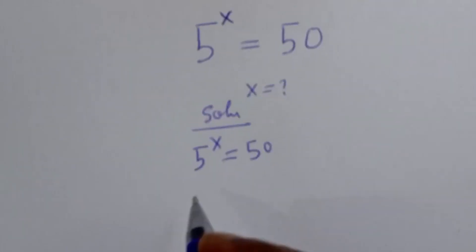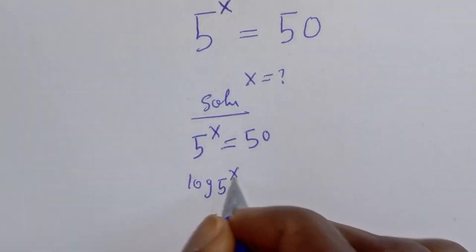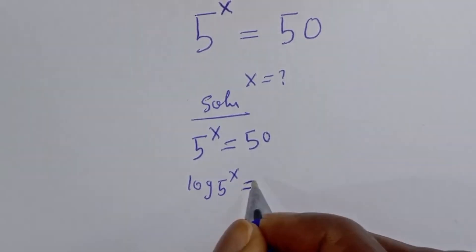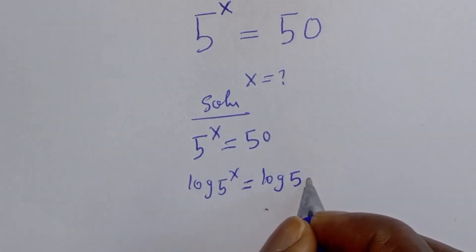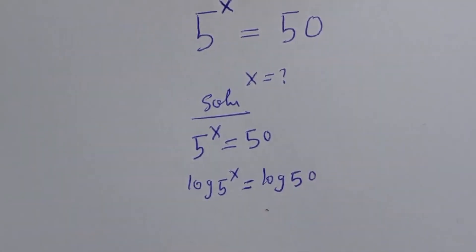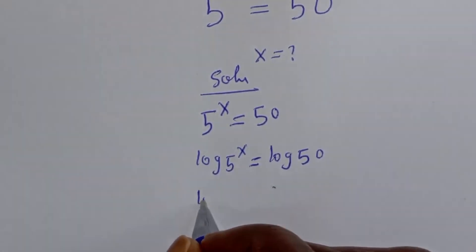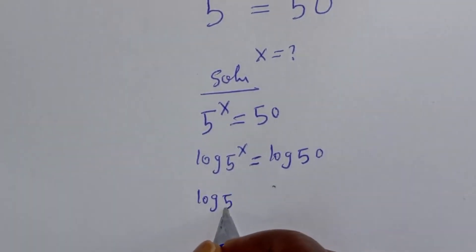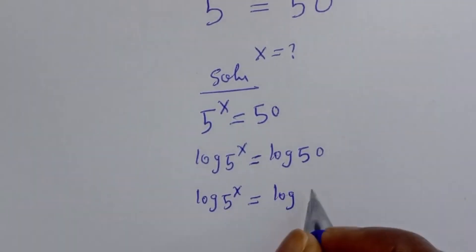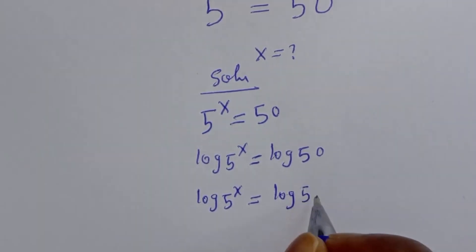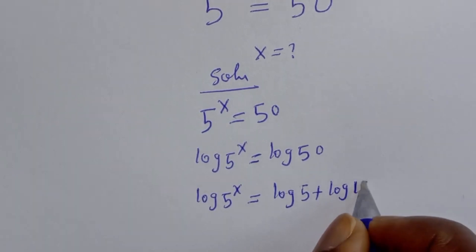Let's take the log of both sides. We have log 5 raised to power s is equal to log 50. Then log 5 raised to power s is equal to log 50 can be written as log 5 plus log 10.